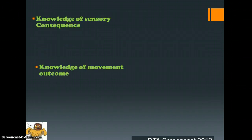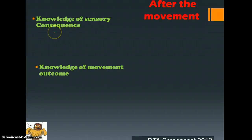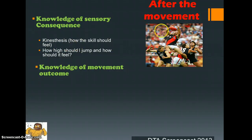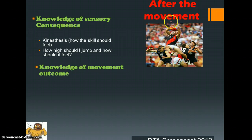The next stage covers the recognition schema, broken down into knowledge of sensory consequence and knowledge of movement outcome — both occurring during and after the movement. Knowledge of sensory consequence is kinesthesis: how the skill should actually feel. In this picture someone is playing in a line-out — how high should he actually jump and how should that feel? That kinesthesis will allow us to know whether we're performing the skill suitably or not.